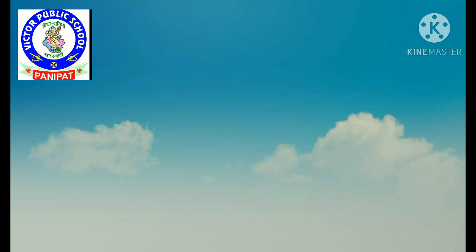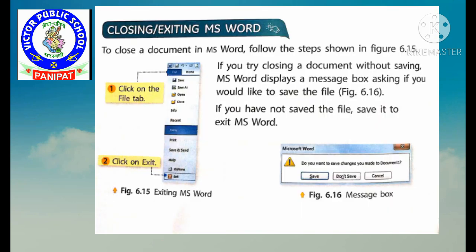Next is closing or exiting MS Word. To close the document in MS Word, follow these steps. First of all, click on the File tab, and then click on the Exit option.